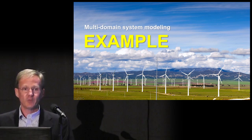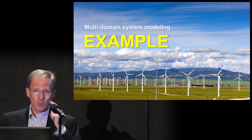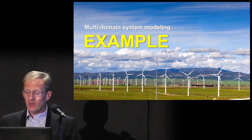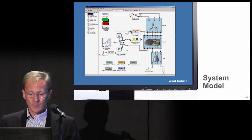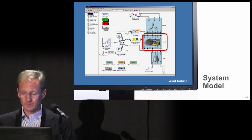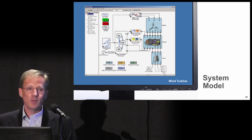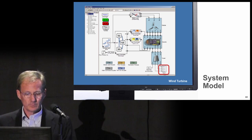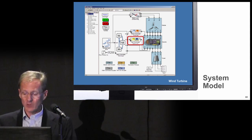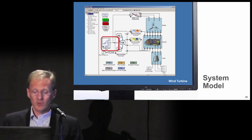I'd like to show you an example of all this working together. This is a picture of a wind turbine farm, and I'm going to show you the multi-domain model of a wind turbine. Here's a multi-domain model of a single wind turbine. Here are the blades, this is the nacelle — the compartment that holds everything but the blades — this is the tower. We even have a model of the electrical grid. Here's the pitch controller, the yaw controller, and the main controller. This is the model of the wind, which is an input to the system.